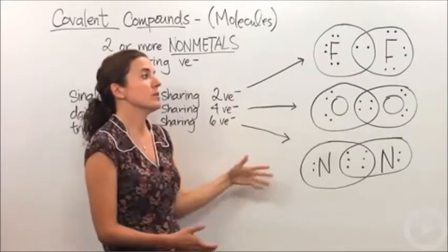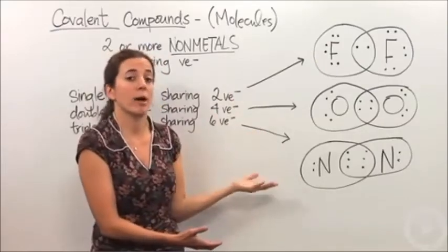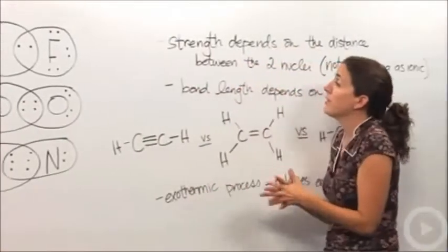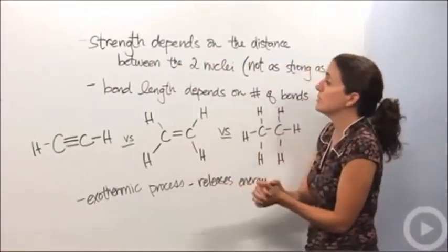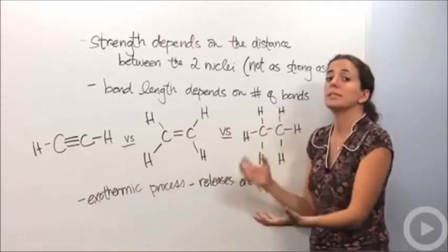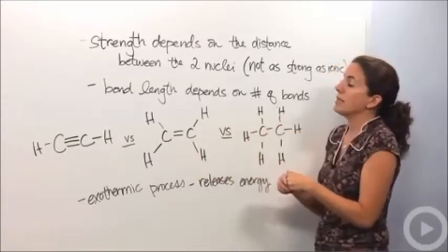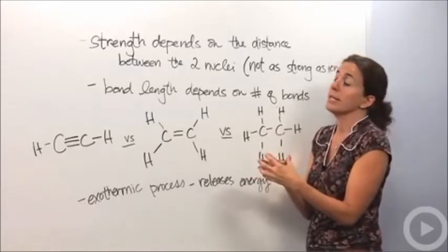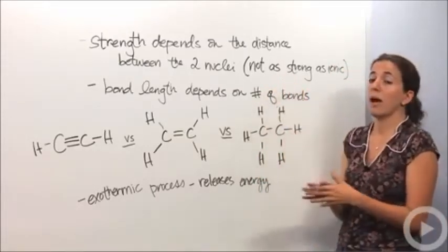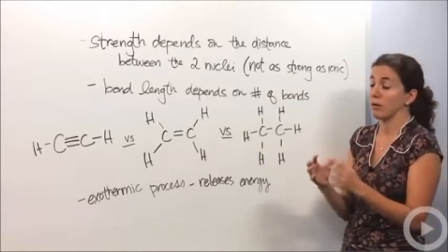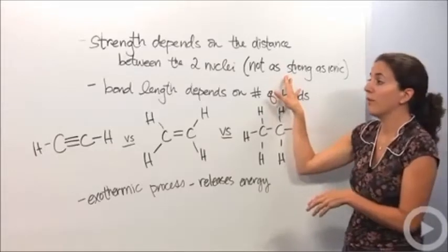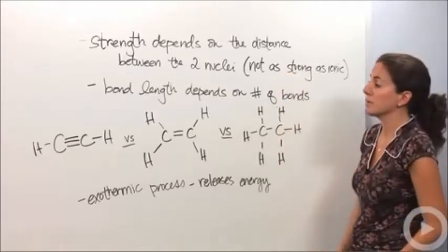Let's talk about the characteristics of these covalent bonds. The strength depends on the distance between the two nuclei. The further the nuclei are from each other, the easier they are to break. So the closer they are, the stronger that bond is. However, note that they're not as strong as ionic bonds. Ionic bonds have a very strong connection to each other—those are the strongest type of bond we can have. Covalent bonds are not as strong.